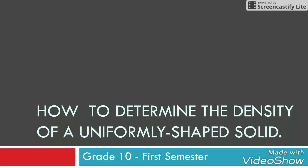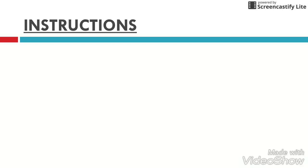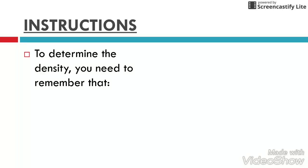Hi, today we will learn how to determine the density of a uniformly shaped solid. To determine the density, you need to remember that density equals mass over volume, or d equals m divided by v.